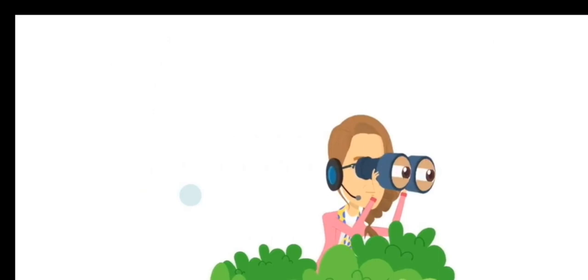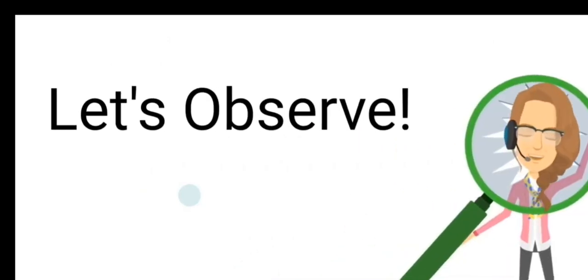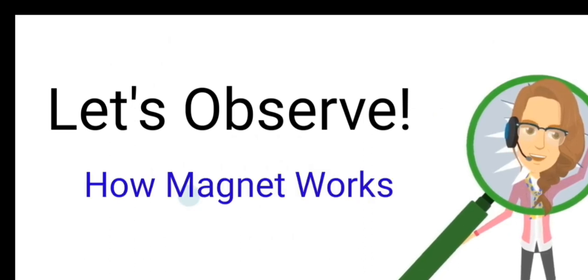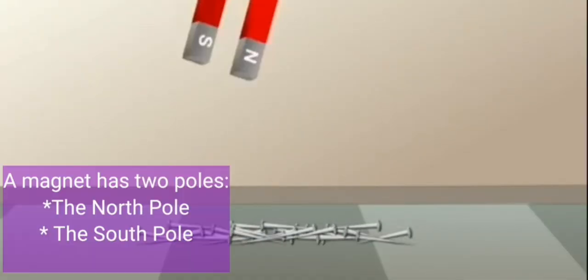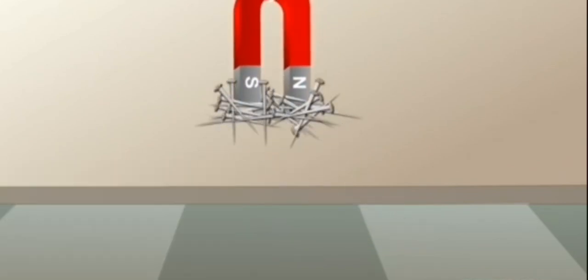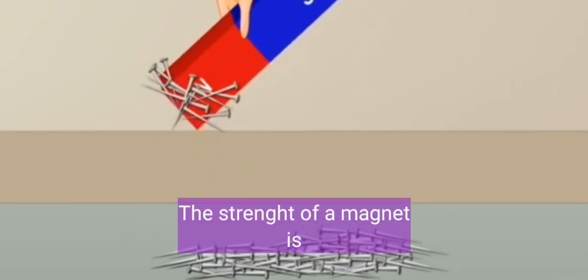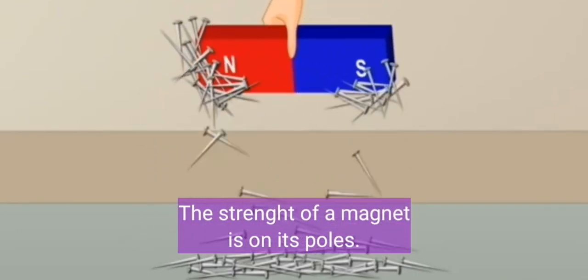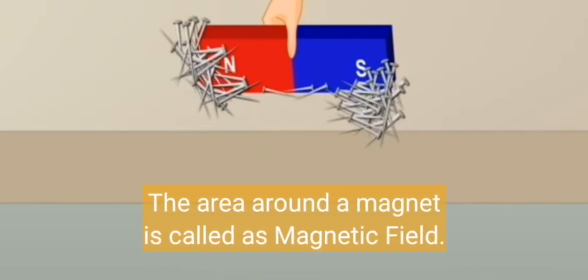horseshoe magnets, and ring magnets. Let's observe how magnets work. A magnet has two poles: the north and south pole. The strength of the magnet is on its poles, and the area around the magnet is called the magnetic field.